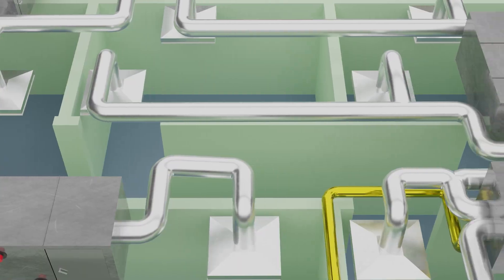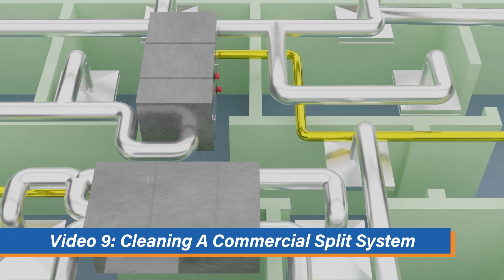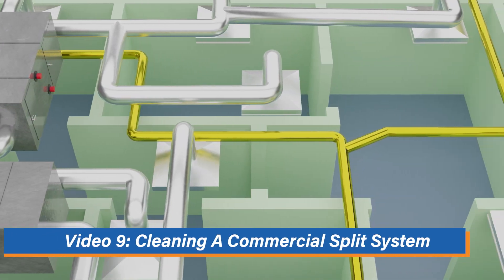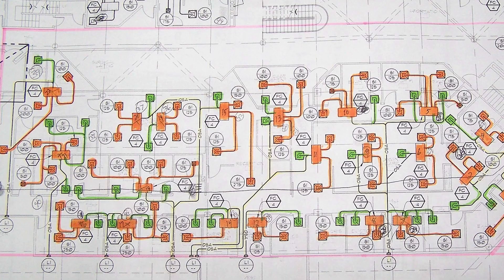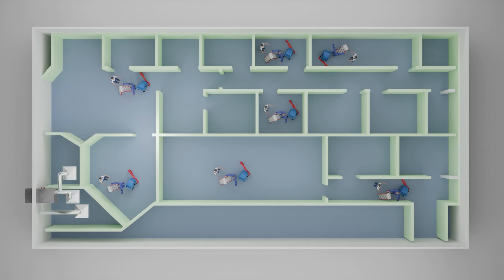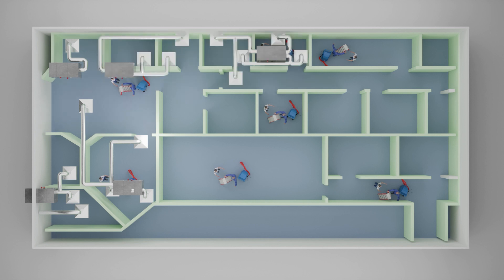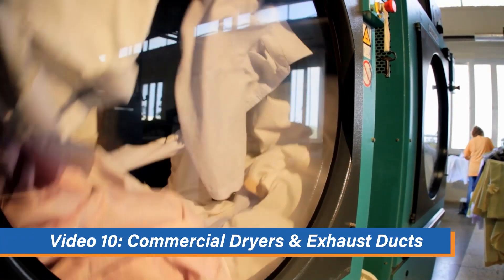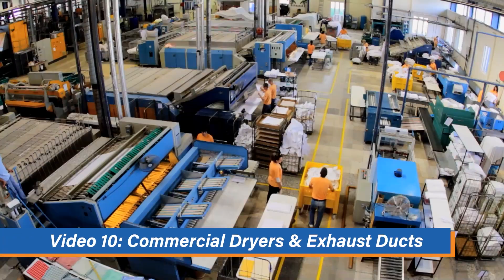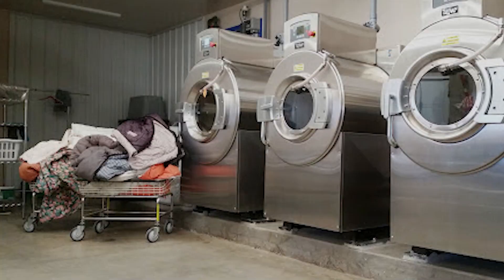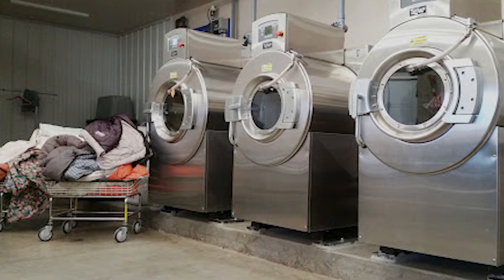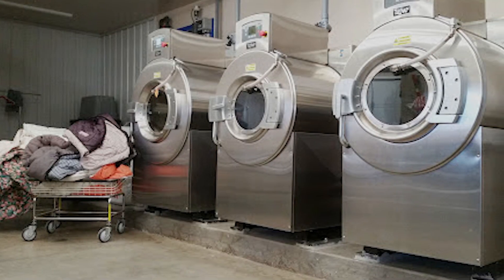Our next lesson is cleaning a commercial split system. These are compact, individual systems that target specific areas in the building. Our tenth video covers commercial dryers and exhaust ducts. These can be very profitable jobs you may want to pursue.